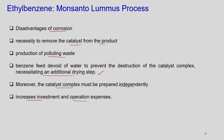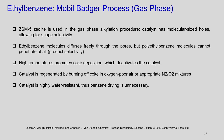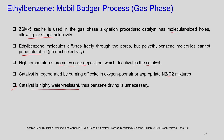Moving to the other process — the gas phase Mobil Badger process. ZSM-5 zeolite is used in gas phase alkylation. This catalyst has molecular-size holes allowing for shape selectivity — it will only allow ethyl benzene to pass through. Ethyl benzene molecules diffuse freely through the pores, but polyethyl benzene molecules cannot penetrate. So there is product selectivity. However, the high temperature promotes coke deposition which deactivates the catalyst — it is regenerated by burning of coke in oxygen-poor air or nitrogen-oxygen mixture. The advantage is the catalyst is highly water resistant, eliminating the benzene drying step needed in the Monsanto-Loomis process.